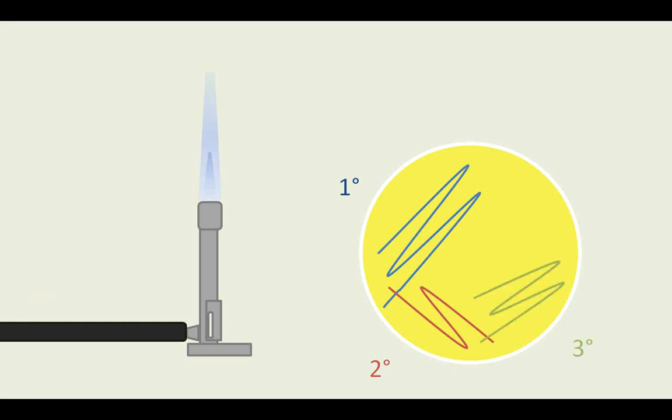Continue in this way a third and fourth time, drawing from the end of the previous streak onto a new part of the plate, making sure to flame the loop between streaks.